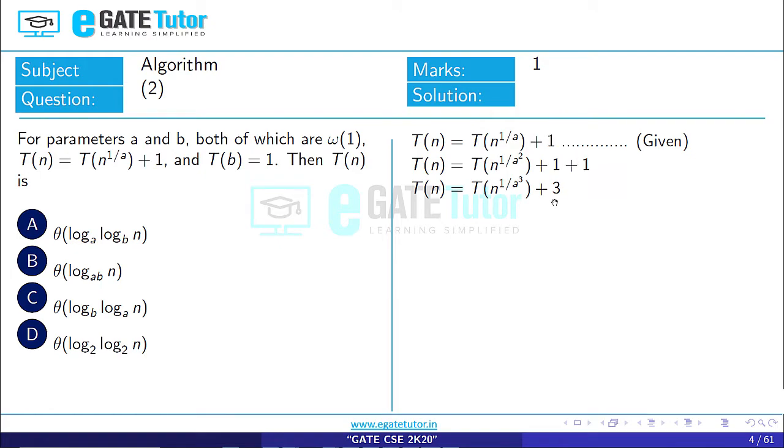Plus 1 plus 1 plus 1 is plus 3 and so on. We will do this till the value will reach to k, T(n) = T(n^(1/a^k)) + k.